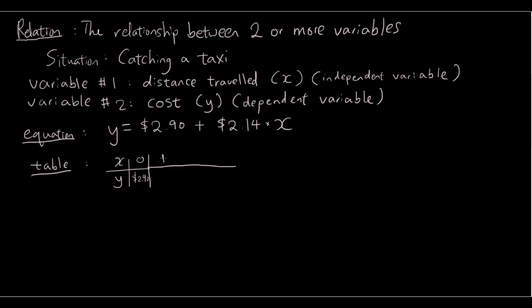Now, let's say you travel 1 kilometer in the taxi. The car drives 1 kilometer down the road. You would have paid $2.90 plus $2.14, which is going to be $5.04.